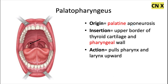The palatopharyngeus muscle originates from the palatine aponeurosis, which is the same place that the palatoglossus muscle originated from. It's also innervated by the same cranial nerve as the palatoglossus muscle, which is cranial nerve 10. It inserts into the upper border of the thyroid cartilage as well as the lateral pharyngeal wall — hence the name palatopharyngeus. The action is to pull the pharynx and the larynx upwards.